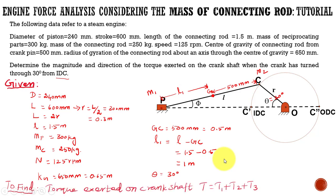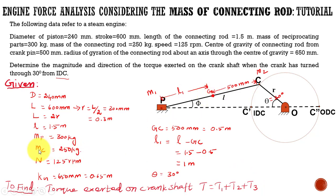We are going to calculate the torque exerted on the crankshaft by finding T1, T2, and T3. T1 is the torque due to piston effort. T2 is the torque due to the correction couple. T3 is the torque due to the mass placed at the crank pin. We divide the mass of the connecting rod into two parts: M1 placed at the piston, and M2 placed at the crank pin.